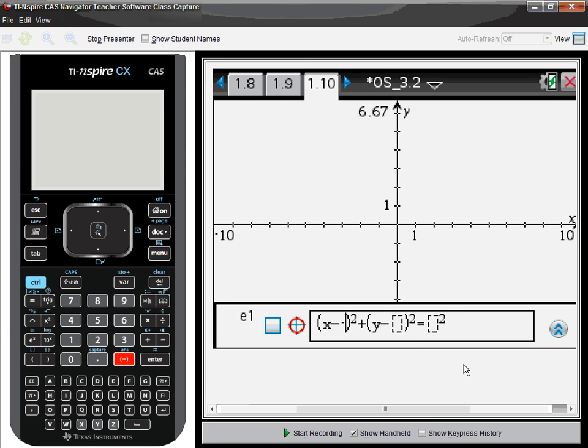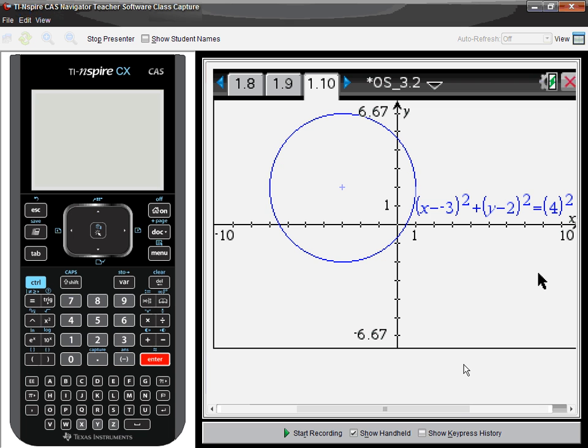So let's say x minus negative 3 the quantity squared plus y minus 2 the quantity squared equals 4 squared. And it graphs that just fine.